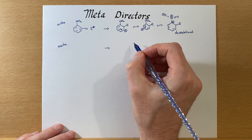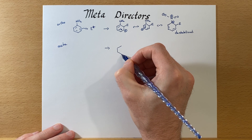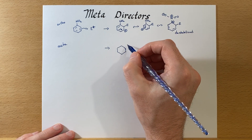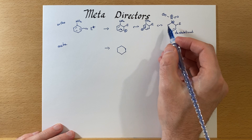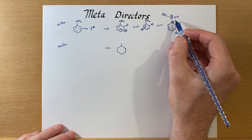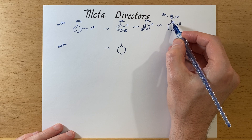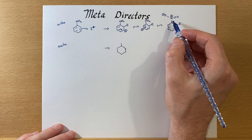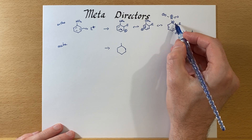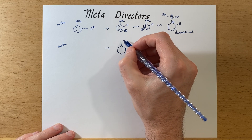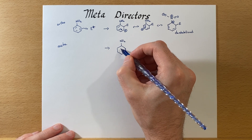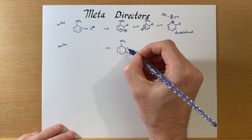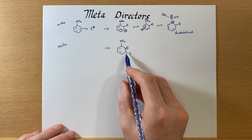Now let's look at the meta case, which naturally will not have that plus charge in the same position. For the exact same reason that an electron donating group being positive helped with ortho substitution, having an electron withdrawing group here will do the exact opposite and destabilize that. So here we've done meta substitution.